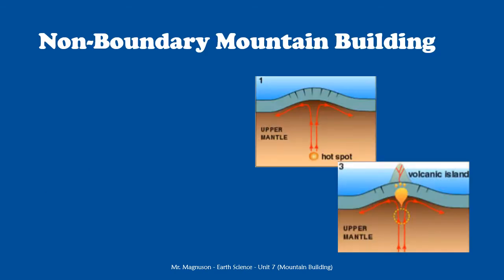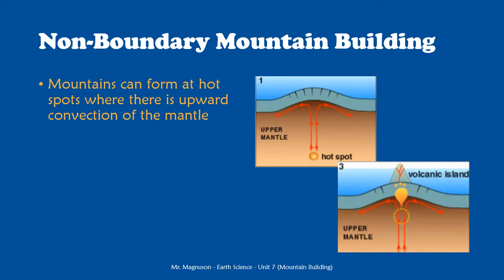Next, I want to talk about non-boundary mountain building. Not related to our edge-of-boundary processes, we can have mountains forming related to hotspots. Hotspots are formed by upward convection of the mantle — we get a mantle plume or rising very hot rock that pushes against the crust, and we can have two things that happen.